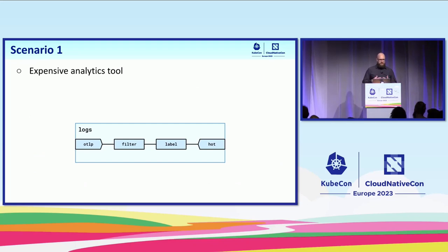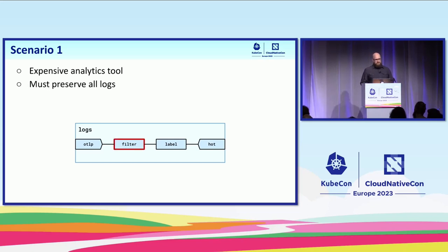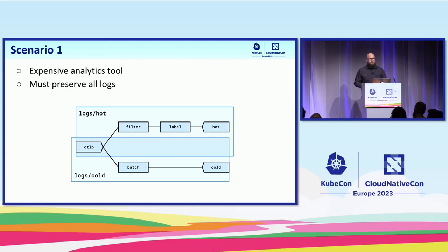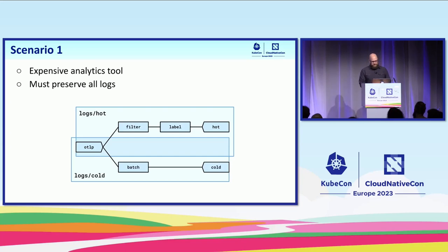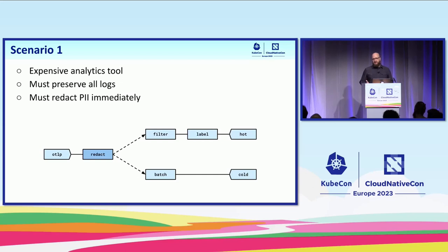Let's look at a scenario. We have an expensive analytics tool and a lot of log data. We can't afford to send all of the log data to the tool, so we're filtering a lot of it out. But let's say we have another requirement where we must preserve all of the data — some regulatory requirement. So we can't afford to send it all, but we also can't filter it. We can use the mechanics we've already discussed: share a receiver, which will replicate the data stream. Now we can filter one of the data streams and send it to the expensive tool, while the other goes to cheaper cold storage. But let's add another requirement — a policy where we need to redact PII immediately. So we're ingesting one data stream, we want to redact the PII, then replicate, then process some more.